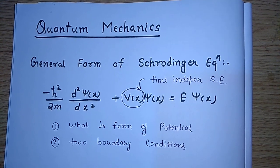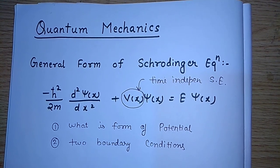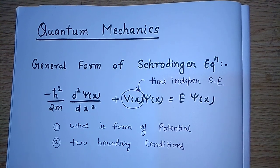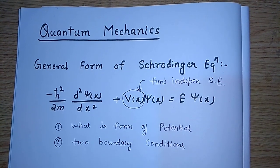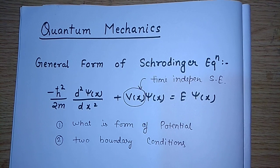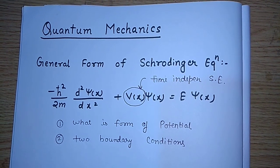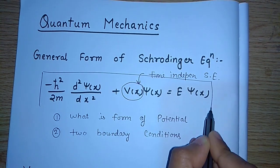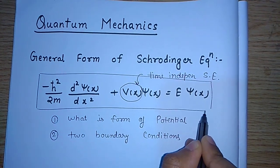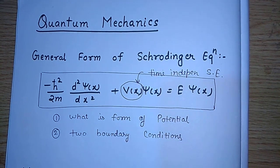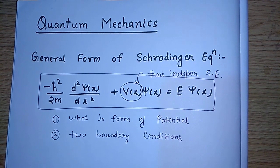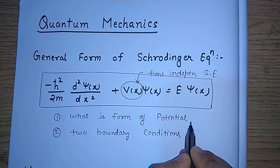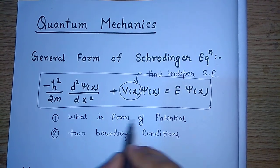Hello everyone, welcome to our channel Science Made Easy. In this video I will talk about simple quantum mechanics. The basis of quantum mechanics is the Schrödinger equation. I have written down here the one-dimensional Schrödinger equation. In order to solve any problem in quantum mechanics, the first thing is that whenever we have a potential, we should know its form.